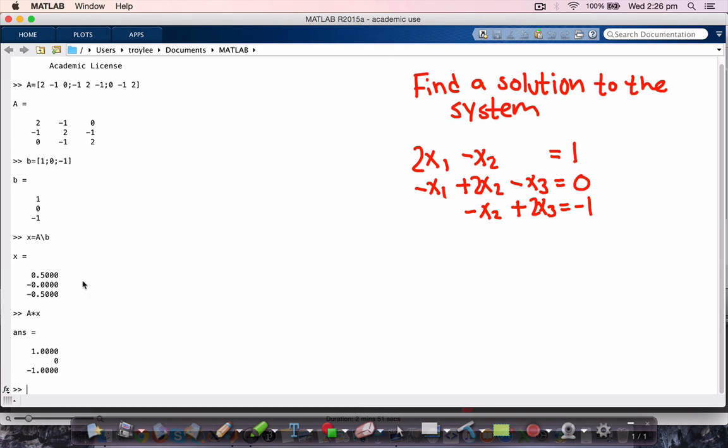So actually MATLAB is always going to return some solution, some value rather, for X in this command X equals A backslash B. Even if the system does not have a solution, it'll just return a value of X that gets you close to the target value B.